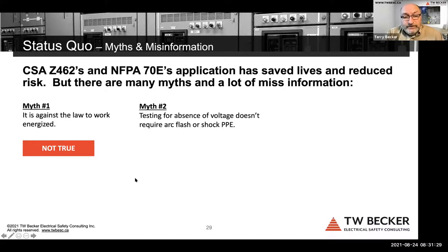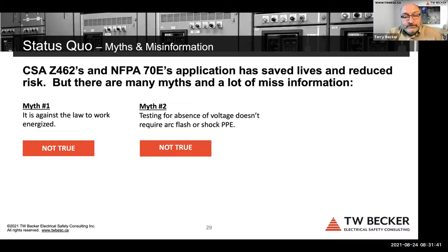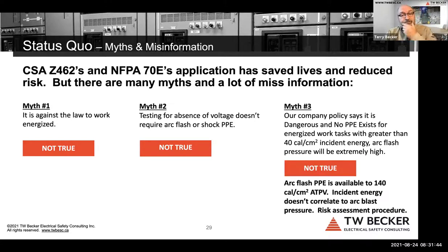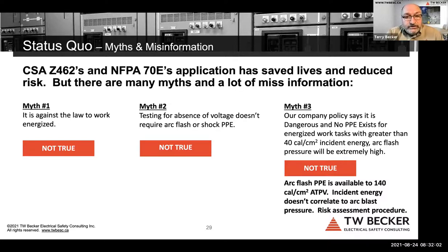Here is a summary of the myths. Myth 1: It's against the law to work energized — not true. Myth 2: Testing for absence of voltage doesn't require arc flash and shock PPE — not true; the qualified electrical worker needs PPE until they establish an electrically safe work condition by proving absence of voltage with an approved test instrument. Myth 3: Our company policy says no PPE exists for energized work tasks greater than 40 cal/cm² and arc flash pressure will be extremely high — not true. Arc flash PPE is available up to 140 cal/cm², and incident energy does not correlate to arc blast pressure.